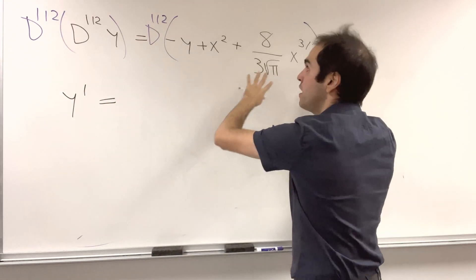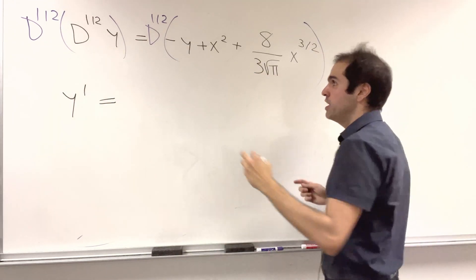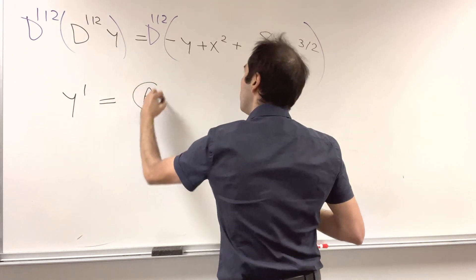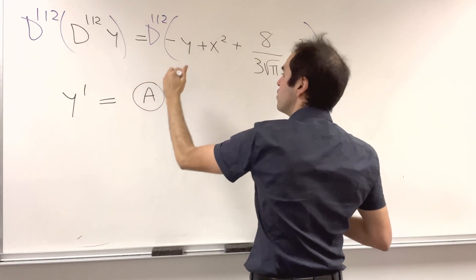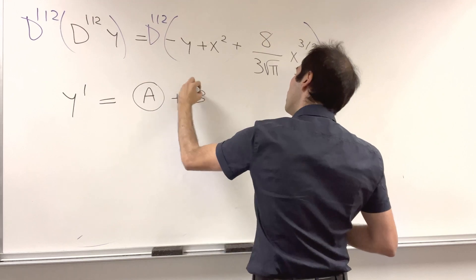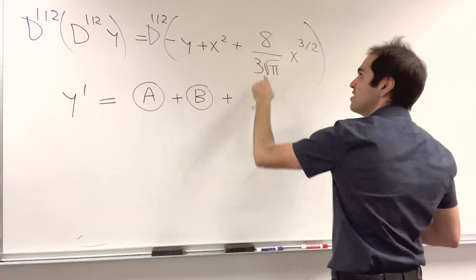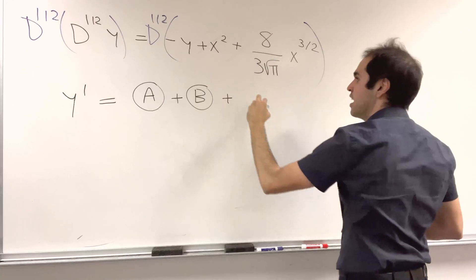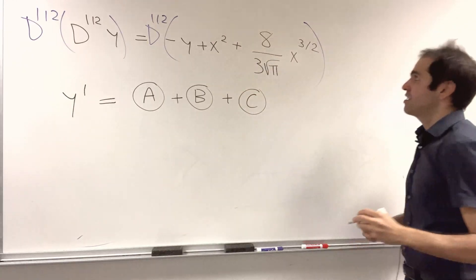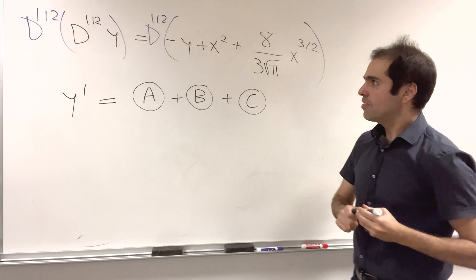So y' now becomes the sum of three terms. One is that half derivative of y term, the other one, the half derivative of x², and the last one, this constant times the half derivative of x to the three halves.